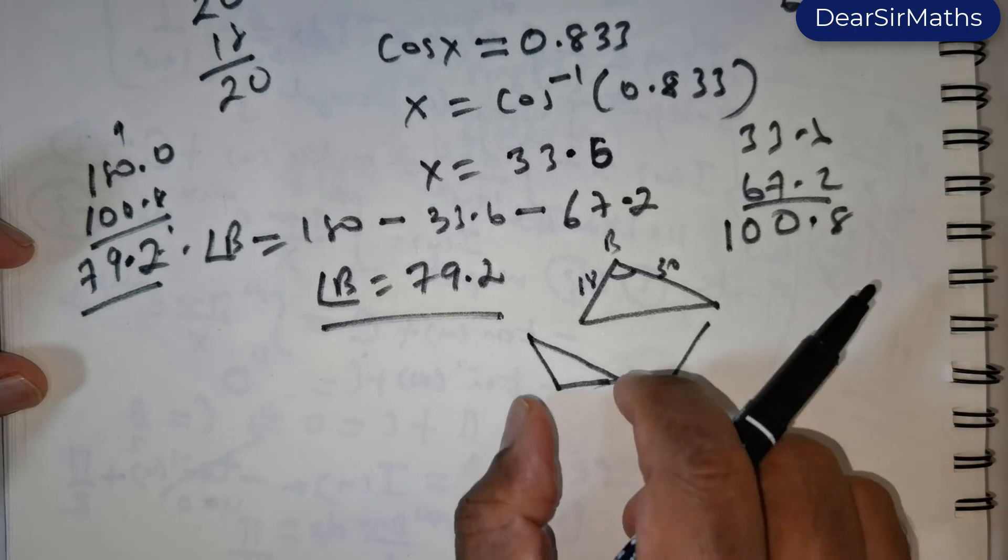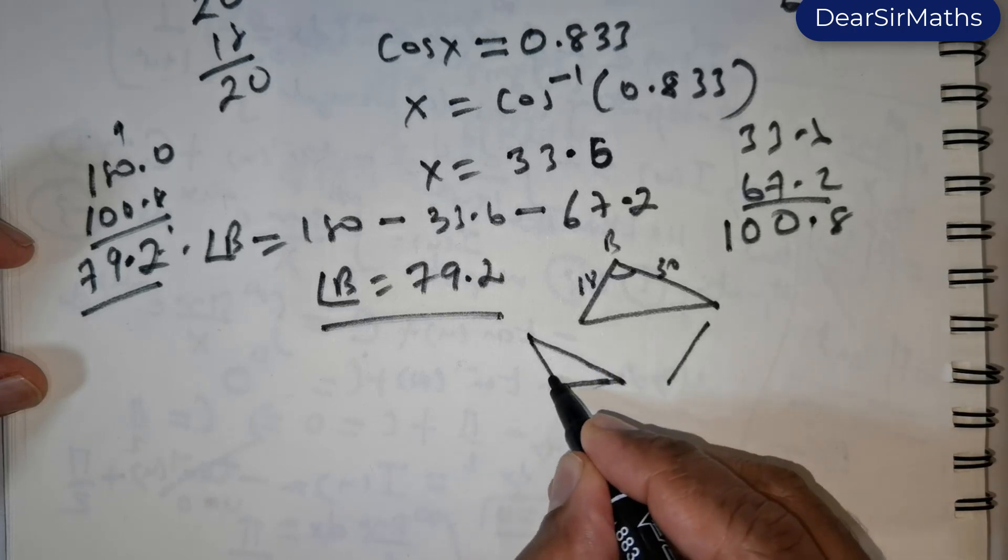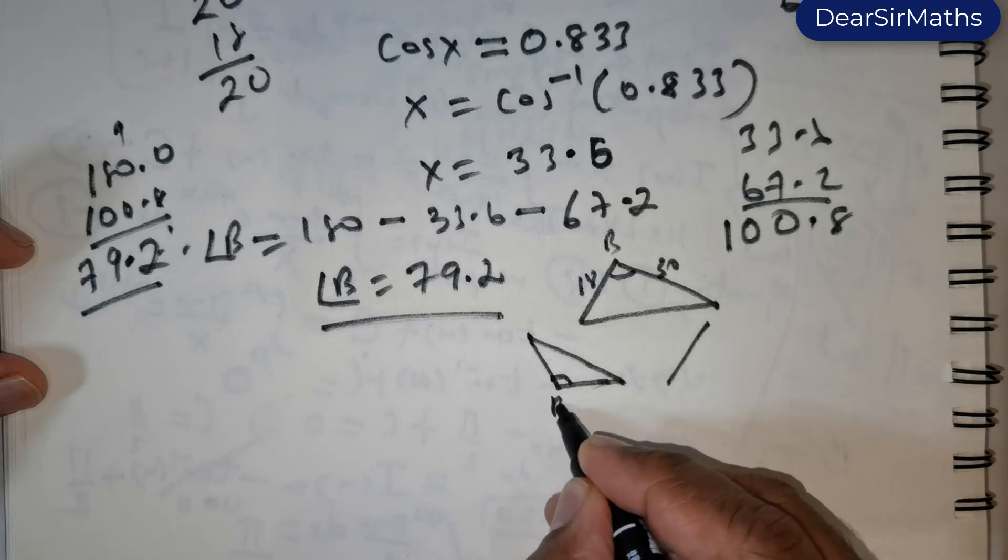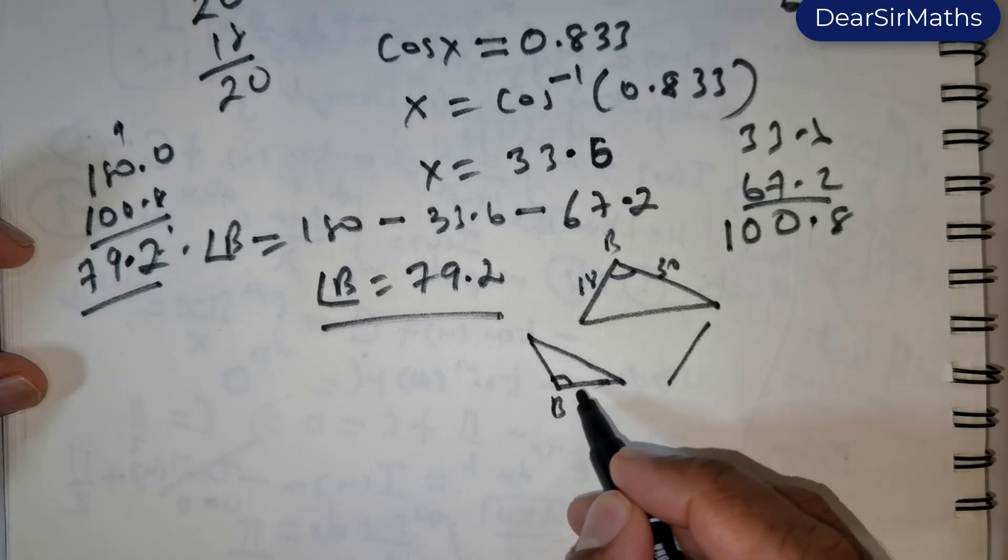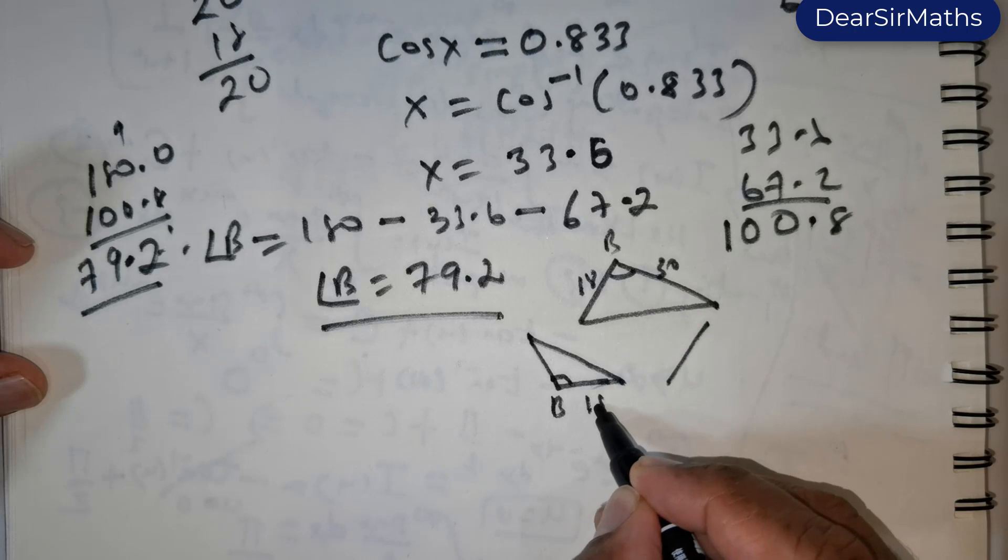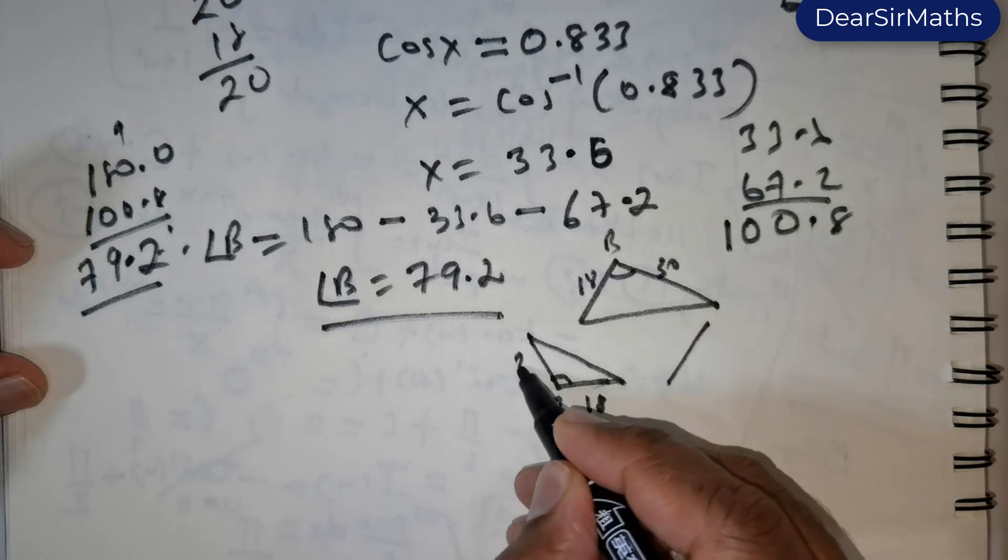Right? So this part which you see here will be my angle B, and this is going to be my 18, and this is going to be my 30.